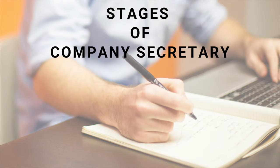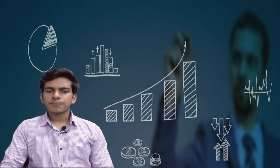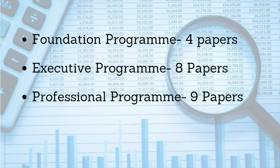The course of a company secretary is divided into three stages. Number one, we have foundation program which has four papers, then we have executive program which has eight papers, and then finally we have professional program which has nine papers.